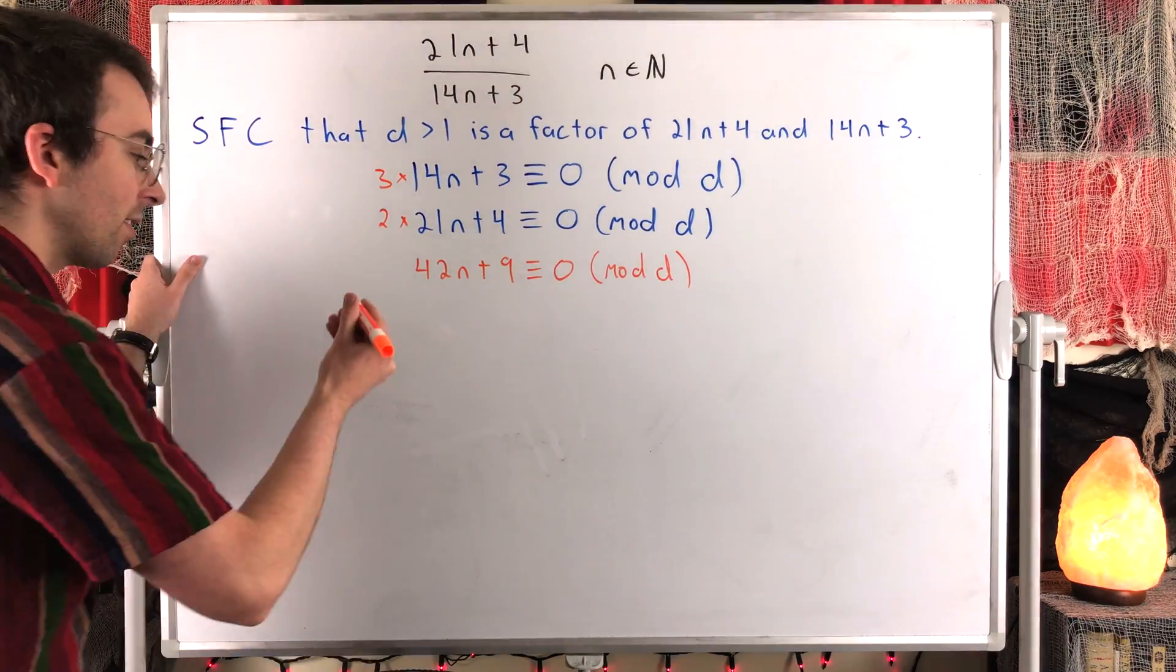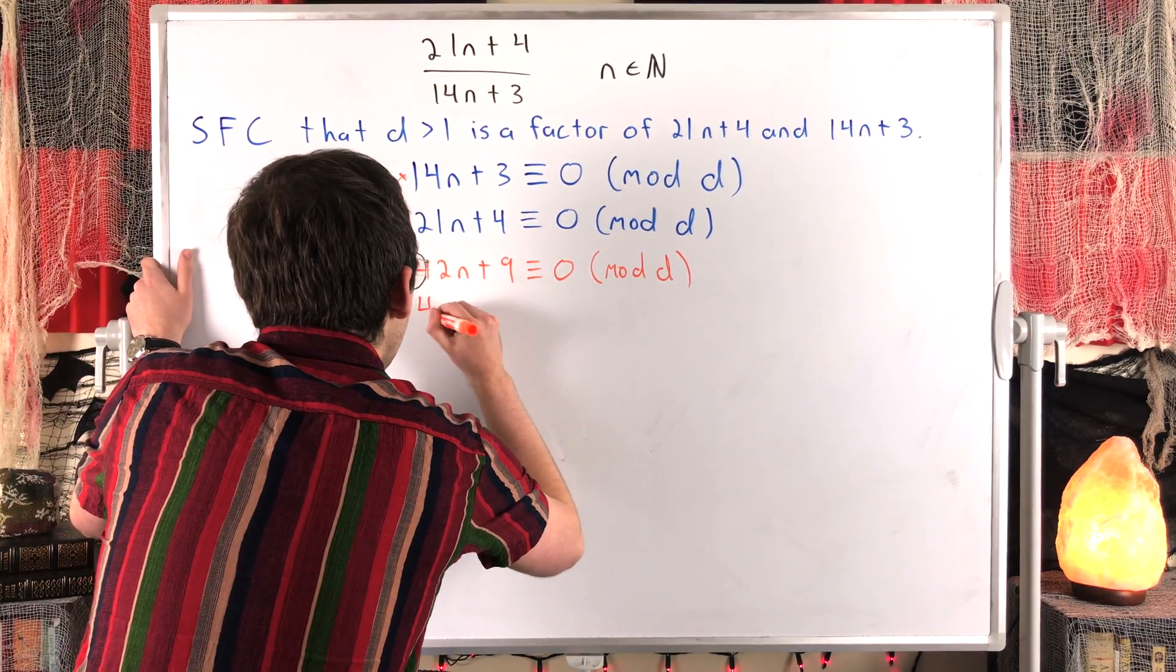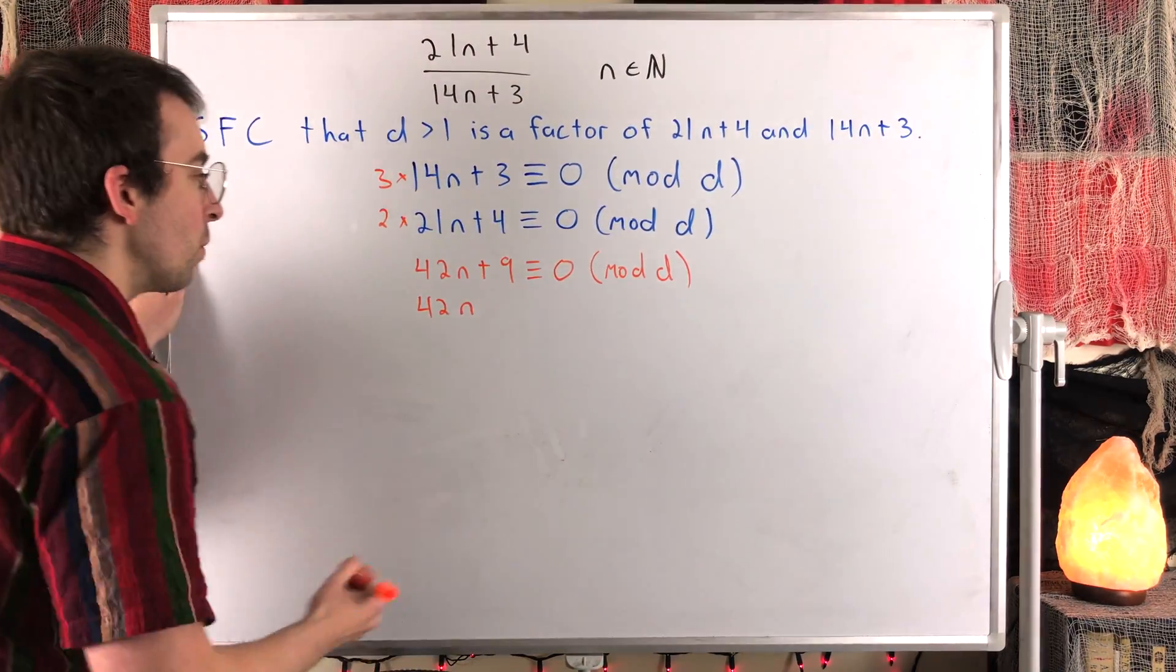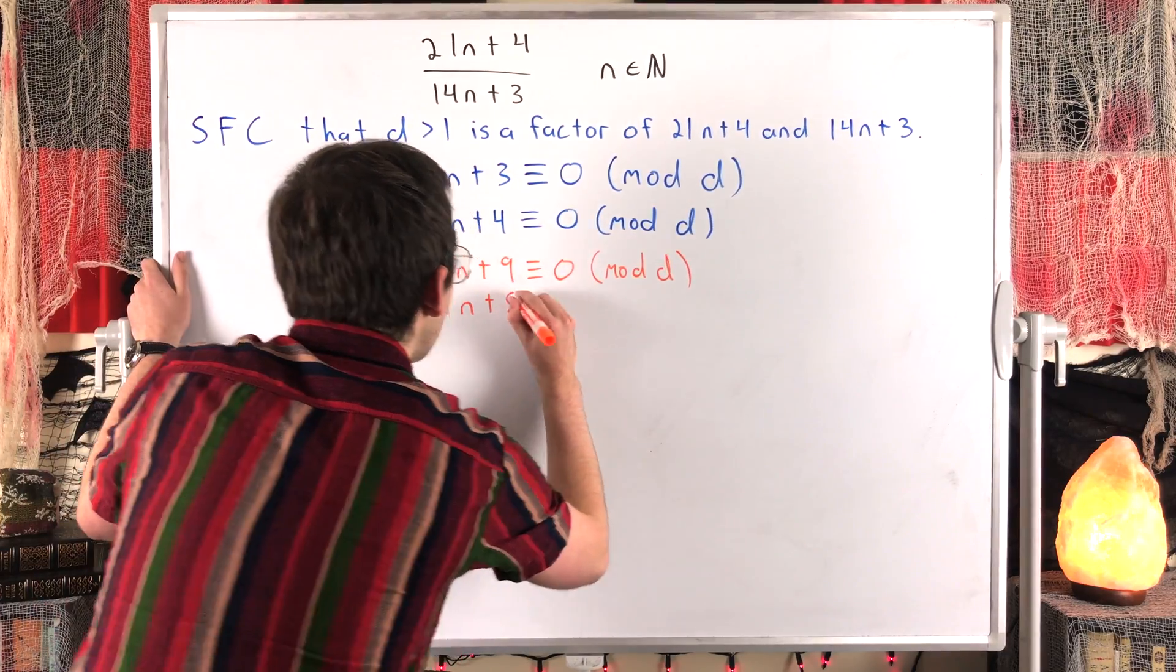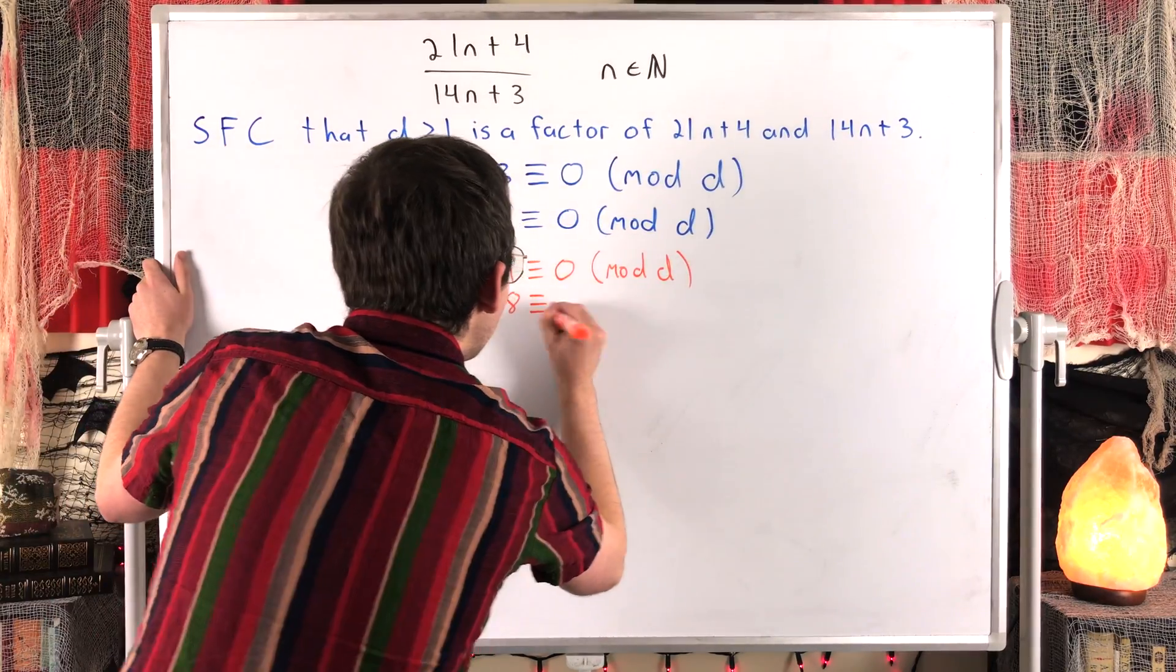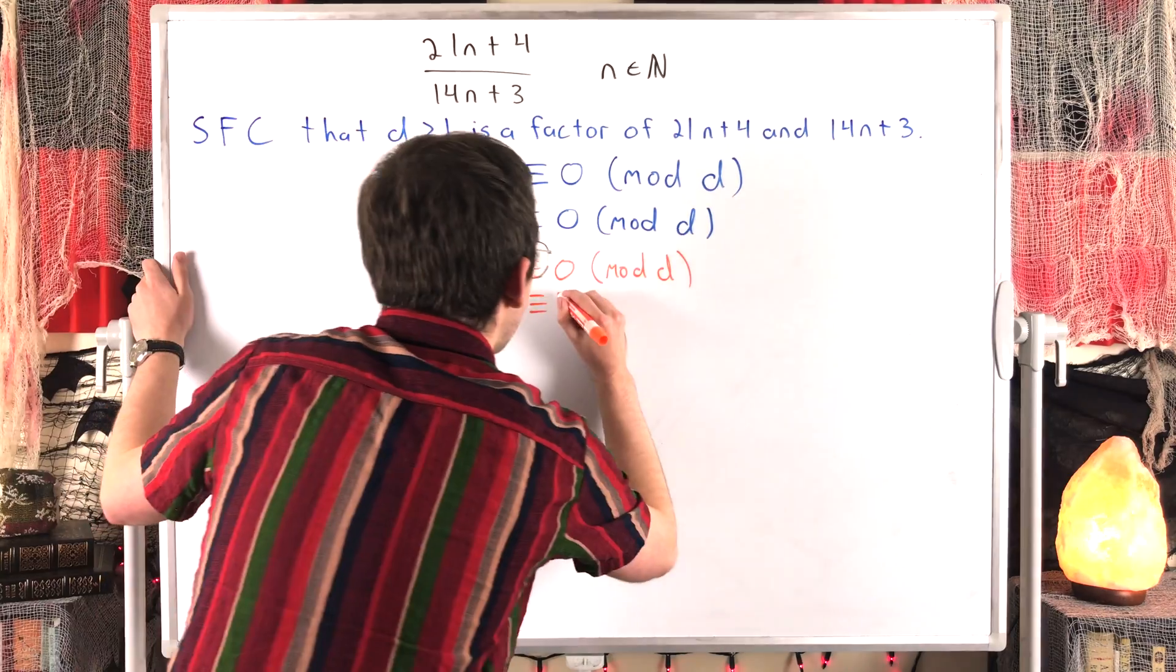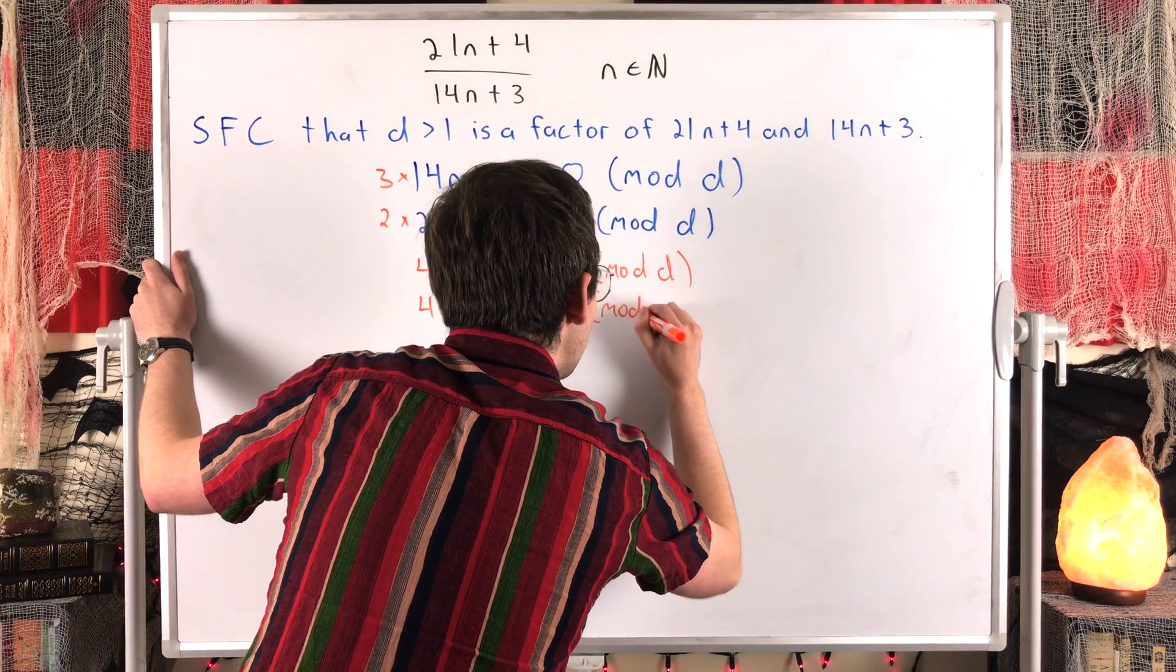2 times both sides of this congruence gives us beautiful 42n, just like we wanted, plus the 4 times 2, so that's plus 8, is congruent to 0 times 2, so congruent to 0 mod D.